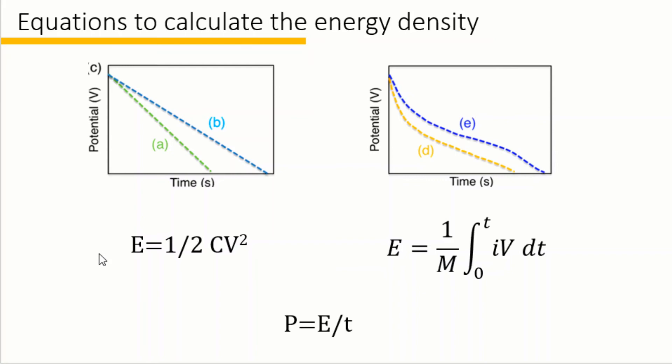It is very common to see the energy calculation equation to be E equals 1/2 CV squared. However, this equation is only for the supercapacitor with perfect linear shaped discharge curve. To calculate the energy for nonlinear GCD curve, we should use a more general equation.